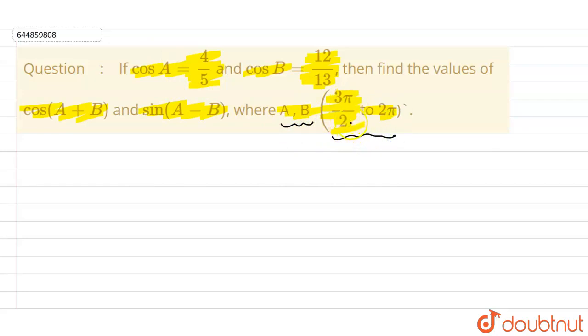So from 3π/2 to 2π, this is the 4th quadrant. And we know that in the 4th quadrant, sin value is negative and cos value is positive.